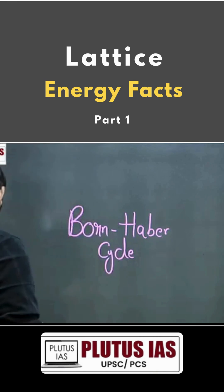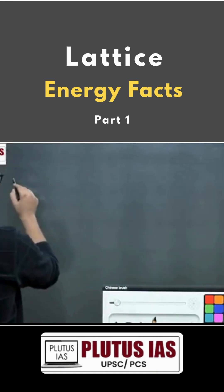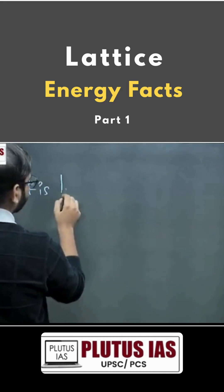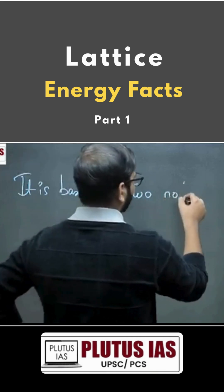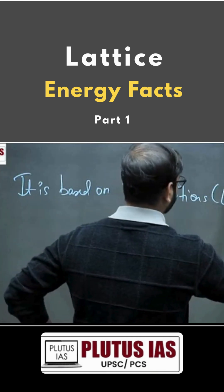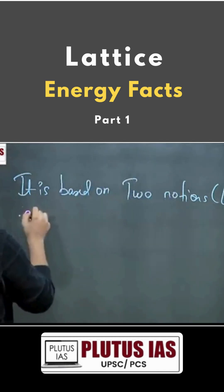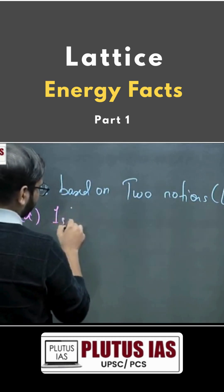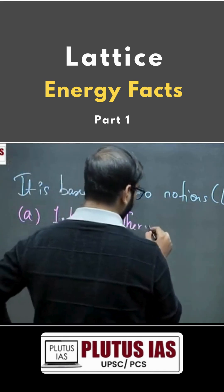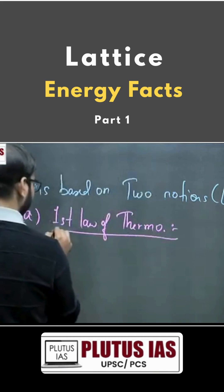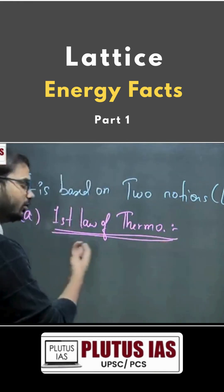The Born-Haber cycle is primarily based on two important notions, or you can say important laws. The first one is the first law of thermodynamics — that means that total energy in a system can never be created nor lost; it can only be transformed from one form to another.